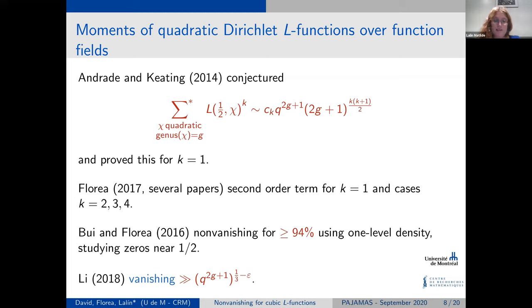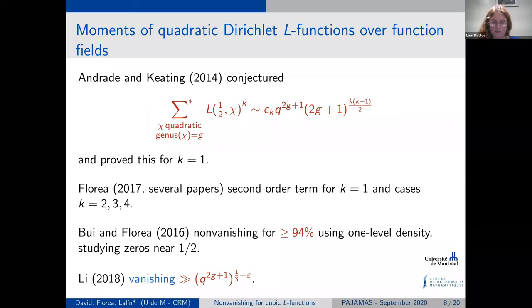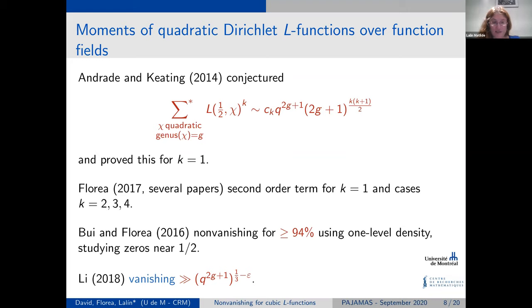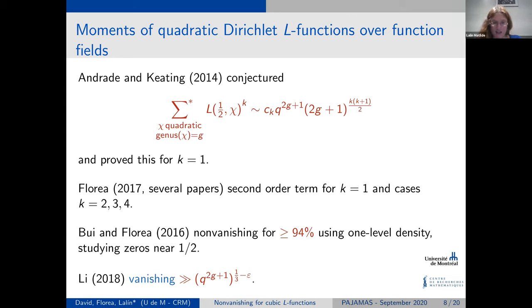There is also a non-vanishing result in the function field setting. Interestingly, there are infinitely many characters for which the L-function actually does vanish. Even though there are infinitely many such characters, their count is much smaller than the total number of characters. This result is due to Wanlin, and it was very surprising when it came out.